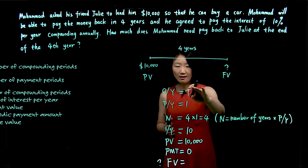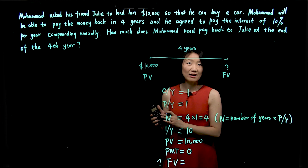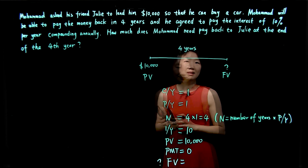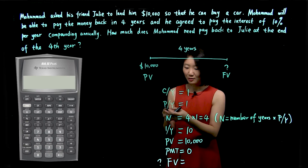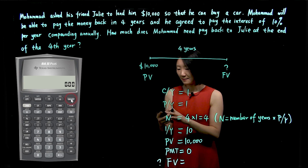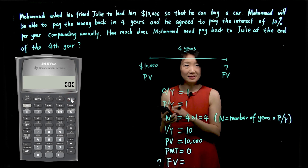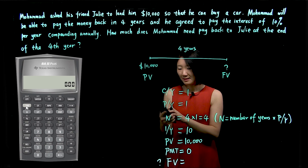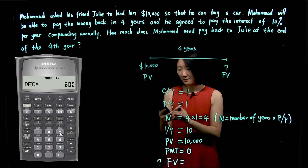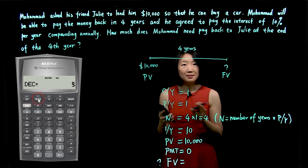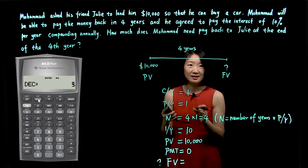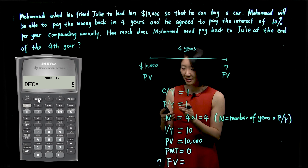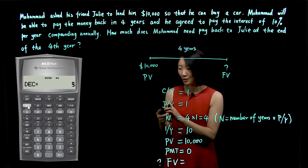Now we have all the information we need and we're ready to use the calculator to solve the problem. On the calculator, push the on/off button to turn it on. Most calculators by default have two decimals, so let's change it to nine decimals first. Push second and format, change decimal to nine — push nine and enter. Please be careful: if you forget to push the enter key, your number will not be entered properly. Now press second quit to exit.